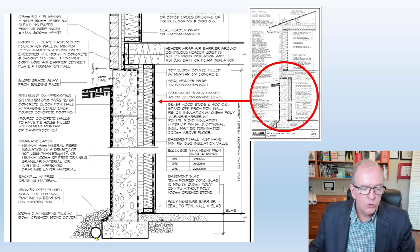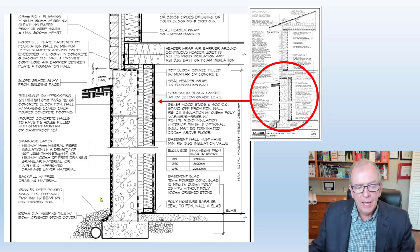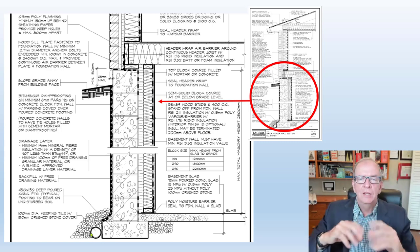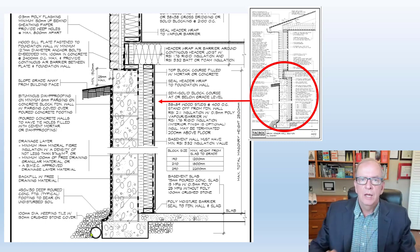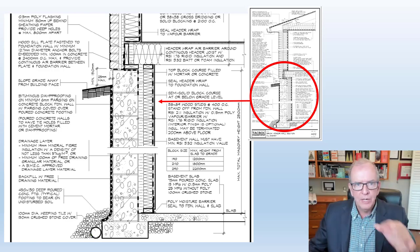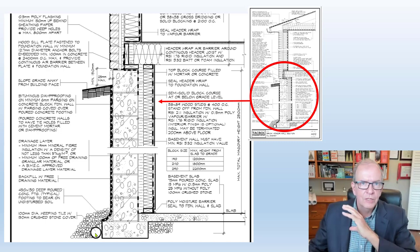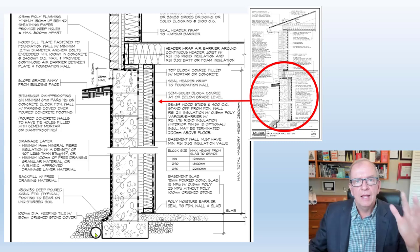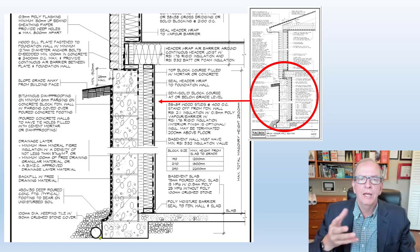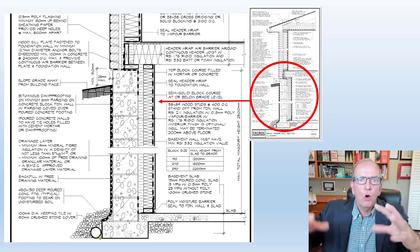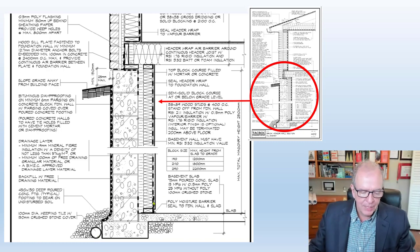On the outside we have weeping tile or drainage tile. These have serrations that allow excess water gathering around the footing to flow in. Usually it has a sock over it — depending on jurisdiction it might be black or whitish in color — which stops soil from penetrating into the tile. It's a long plastic corrugated tube with serrations. Once water gets in it can build up a little, then because it's level around the footings it seeks its own exit point, tying generally to the storm sewers on the street to get rid of excess water from your basement.